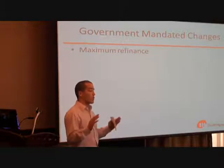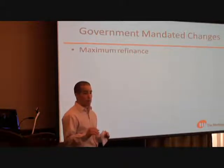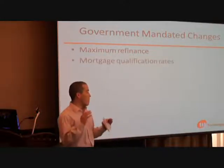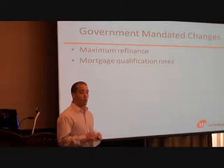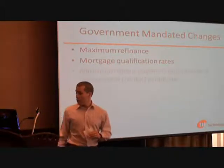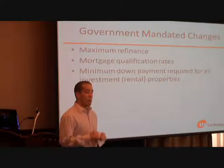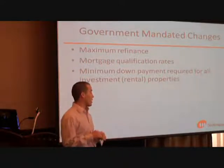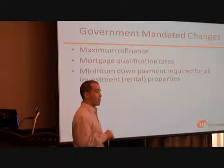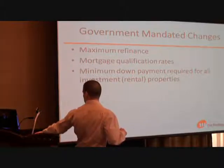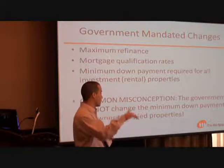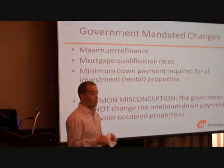The first change is there is a new maximum amount someone can refinance their property to. The second change is to how the banks and insurance companies are going to determine the amount someone can qualify for — the amount of the mortgage. The third change is there is a new minimum down payment requirement for a non-owner occupied rental property. One common misconception is about a new minimum down payment: if someone is going to live in the property, there is no change. They can still buy with as little as 5% down.